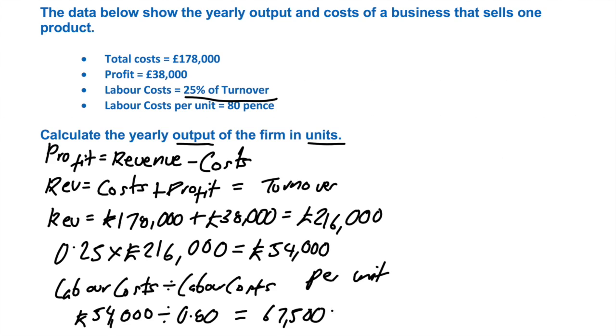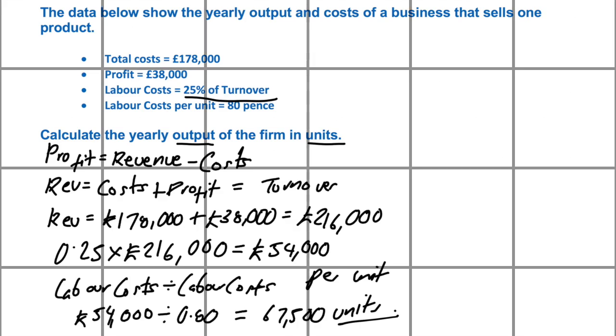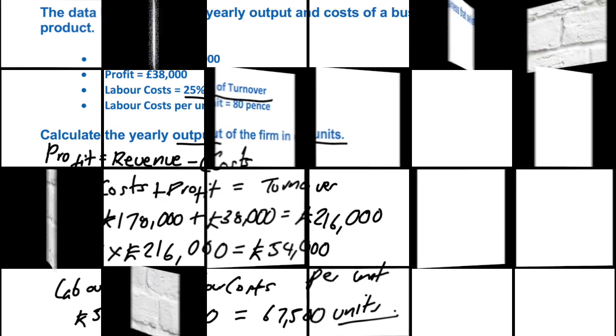Don't forget your units. So the answer is 67,500 units — that's the yearly output of the firm. That was a naughty little maths question! The key to all of these is just use those formulas that you know, and never forget the units at the end.